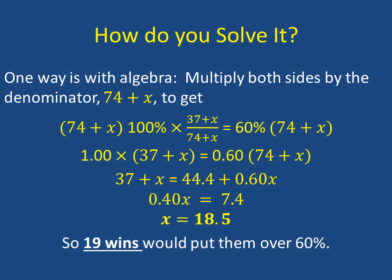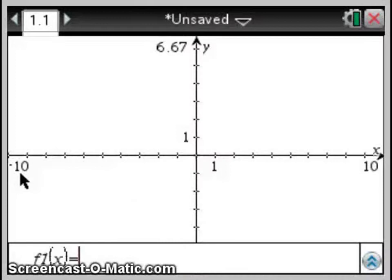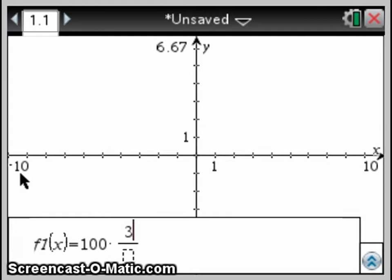Or we can use the calculator. To do this, we'll find the intersection, or possibly more than one intersection, between a graph of the left side of the equation and a graph of the right side to find the values of X where they are equal. In F1, let's go ahead and graph the left side. And since we don't have percent here, we'll just go ahead and put 100. We can hit Control and Divide to get a fraction template. So on top, we're going to put 37 plus X. And on the bottom, we'll put 74 plus X. And enter that.